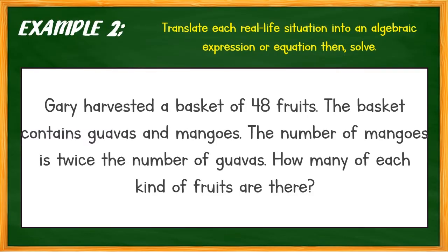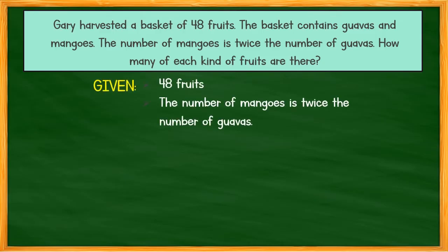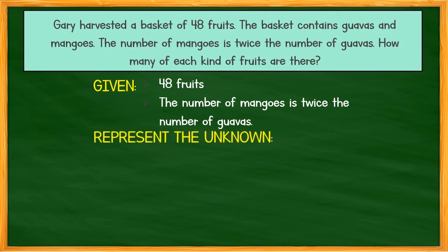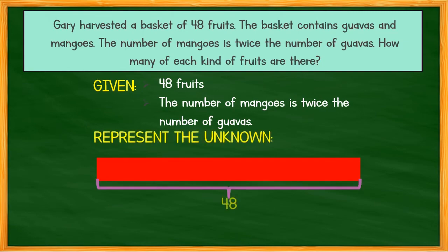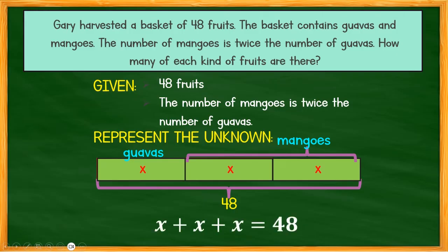For number 3: 'Gary harvested a basket of 48 fruits. The basket contained guavas and mangoes. The number of mangoes is twice the number of guavas. How many of each kind of fruit are there?' Given: 48 total fruits; mangoes are twice the guavas. Let X represent the number of guavas and 2X represent the mangoes. So the equation is: X plus 2X equals 48, which gives us 3X equals 48.